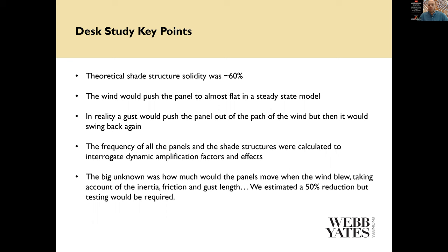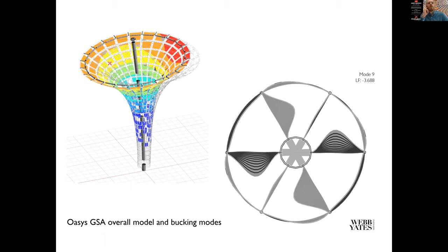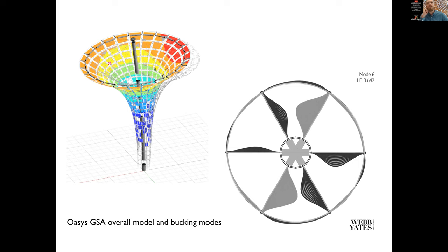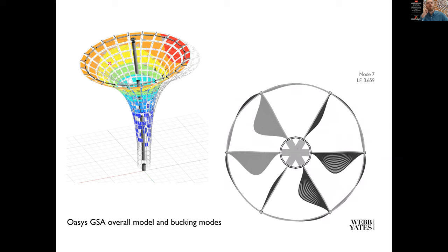We did quite a lot of GSA modelling to verify the forces within the cable net, to make sure we should tension it the way we wanted to, and to make sure we weren't buckling anything. The bottom image there shows the buckling modes of the base of the sun shades, which was a black plate structure — we were double-checking we didn't end up buckling that plate when we tensioned the cable net too much.